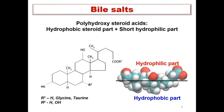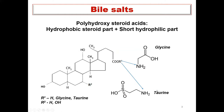Bile salts are polyhydroxysteroid acids with a hydrophobic steroid part, illustrated here, containing two or three hydroxy groups and a hydrophilic tail which can be conjugated by glycine or taurine. Their main role is in the gastrointestinal tract, and it is important to study their aggregation behavior because their aggregates can solubilize hydrophobic molecules and hydrophobic drugs in the gastrointestinal tract.